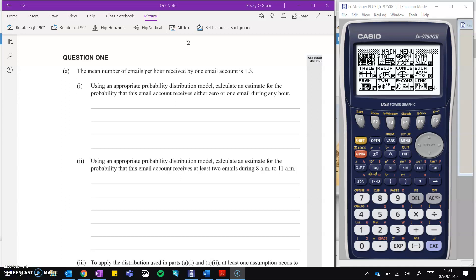So diving into question one, we have the mean number of emails received per hour on one email account is 1.3. Now immediately I'm thinking that's a Poisson distribution because we're being told about a rate. I like to summarize what I'm looking at, so we're going to say X follows a Poisson distribution where lambda is 1.3 and that just helps me keep track of things. This first question says calculate an estimate for the probability that we receive either 0 or 1. So the probability that X is less than or equal to 1, that'll be 0 or 1. And we'll go over to our graphics calculator to do that.